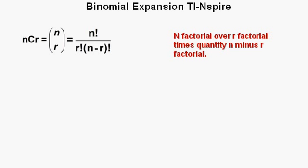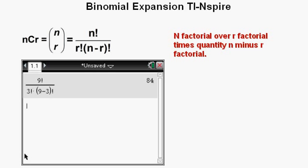Also there's a formula to find the coefficient for any term. It's N factorial over R factorial times quantity N minus R factorial. And while I won't show you how to do the keystrokes, here is the formula entered into the calculator. For our first problem, the fourth term of a binomial to the ninth power, we get 84, just like we found out earlier in our first example.